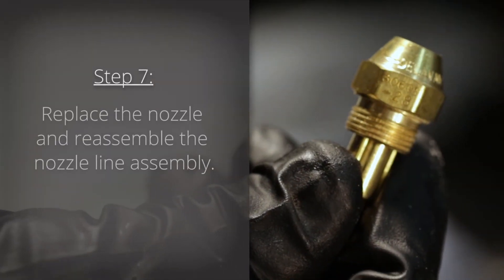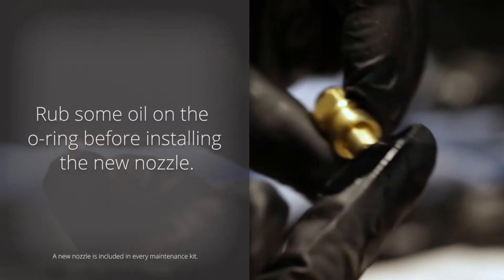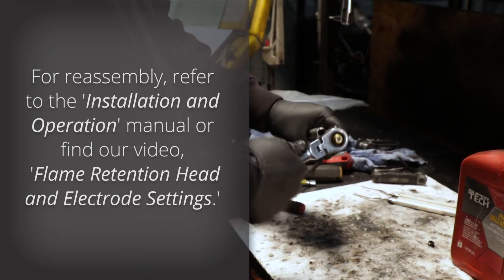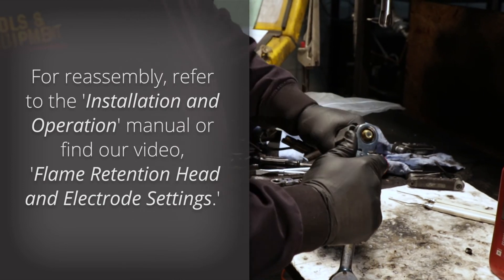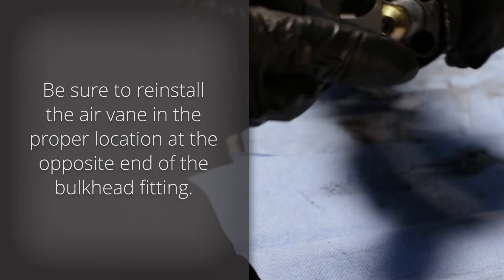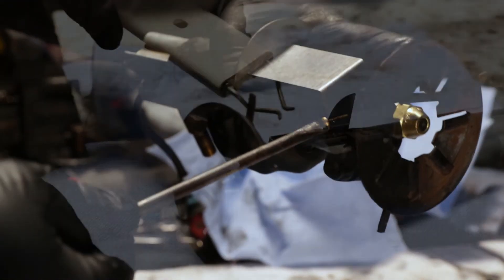Step 7. Replace the nozzle and reassemble the nozzle line assembly. Rub some oil on the o-ring before installing the new nozzle. For reassembly, refer to the installation and operation manual or find our video on flame retention head and electrode settings. Be sure to reinstall the air vane in the proper location at the opposite end of the bulkhead fitting. Incorrect installation could result in an off-center flame which may damage the heat exchanger and void your warranty.